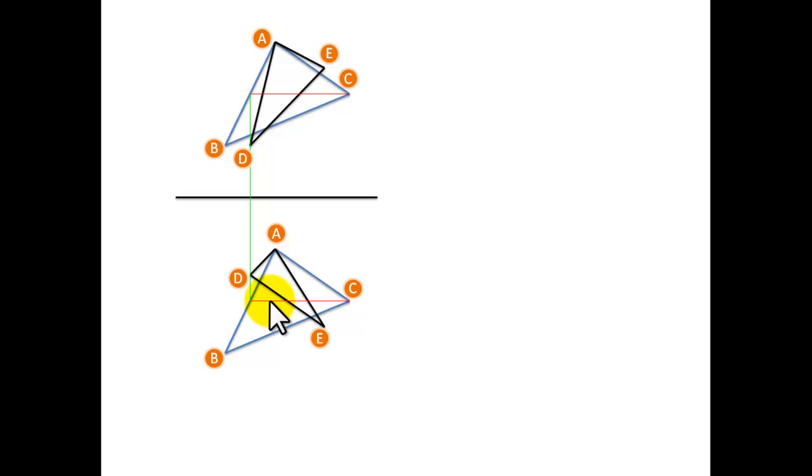Now this line also cuts the line DE and AD. So bring down these two points to corresponding lines in our plan. Now if we join these two points, we find this point here, which is another point on our two planes or another point on our line of intersection.